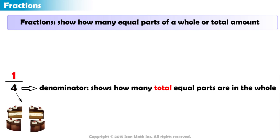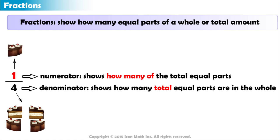The number above the fraction bar is called the numerator and shows how many of the total equal parts. The one in the fraction one-fourth shows one out of four equal parts.